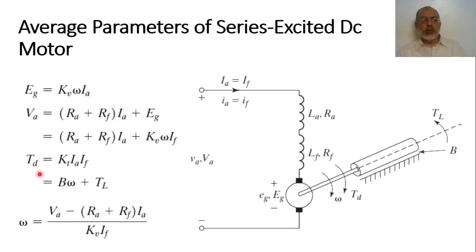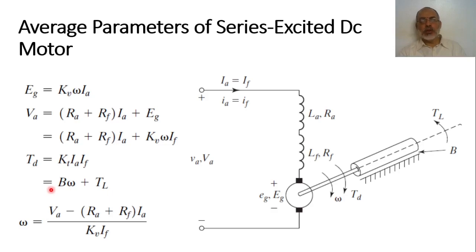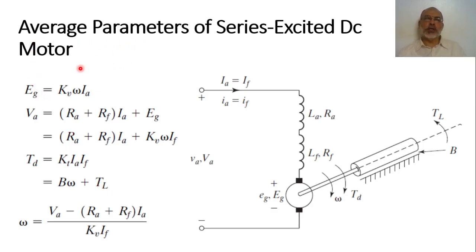On the other hand, the developed torque T equals KT, the torque constant, multiplied by the armature current Ia multiplied by the field current Ia. Since the field current equals the armature current, the developed torque simplifies to KT × Ia². This must equal the mechanical torque, which is B × Omega (viscous friction torque) plus the load torque.